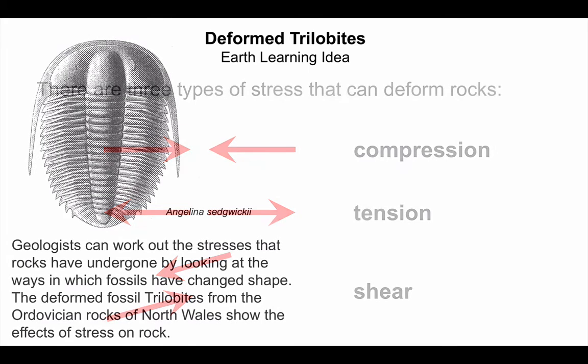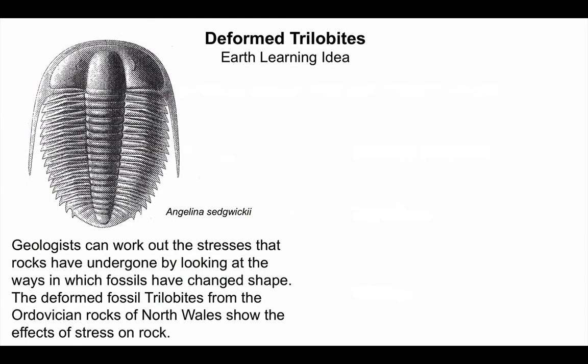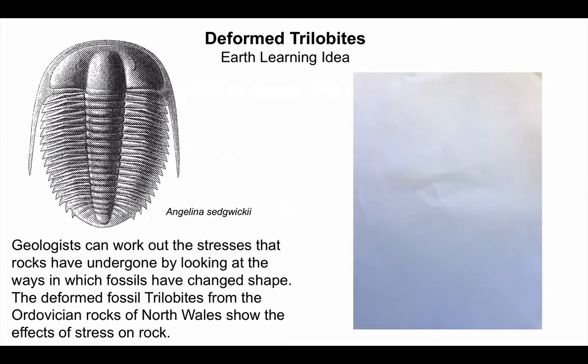Now we can look at the types of deformation by looking at features within the rock that have a defined shape — for example, fossils. This can be done in particular with trilobite fossils that we find in Ordovician rocks in North Wales in the UK. These can show the effects of stress, and we can model how this works using Play-Doh.